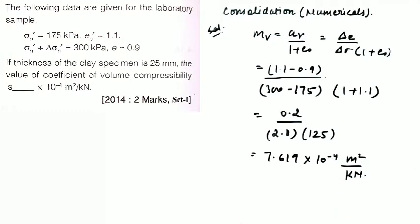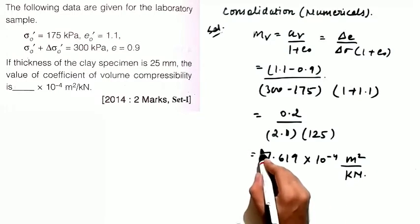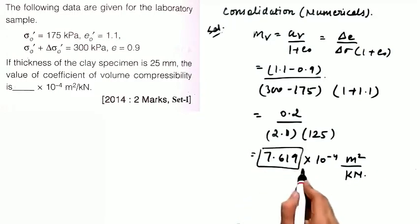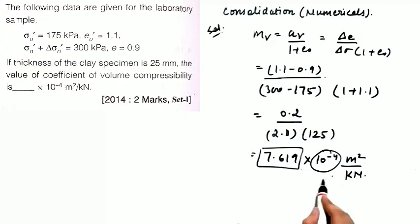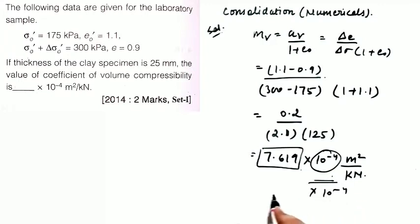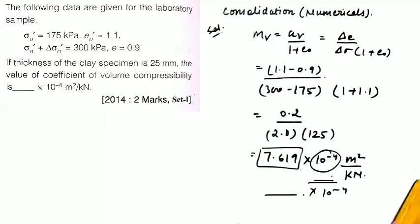The question has given the coefficient of volume compressibility as a blank multiplied by 10⁻⁴, so the answer to fill in is only 7.619, which you can round off to 7.62, since the factor of 10⁻⁴ is already given in the question format.